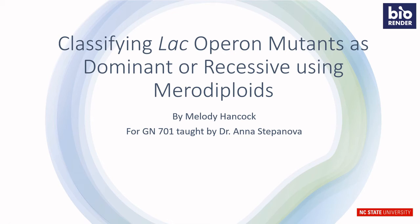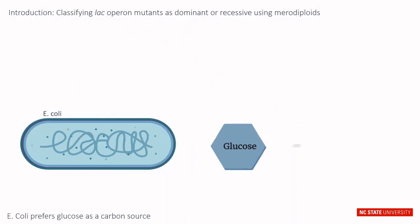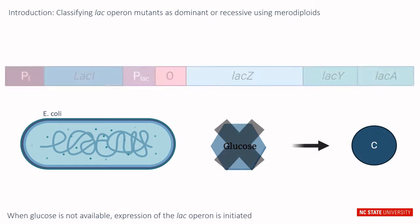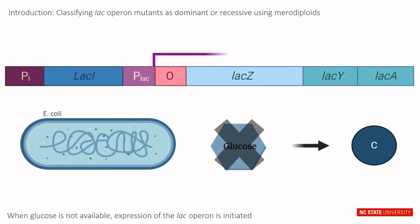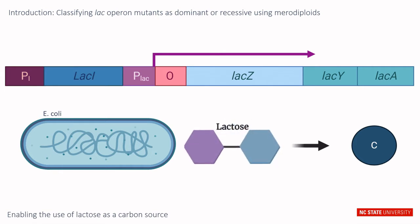In this video, we will be classifying lac operon mutants as dominant or recessive using merodiploids. E. coli prefers glucose as a carbon source, but when glucose is not available, expression of the lac operon is initiated. This allows for the use of lactose as a carbon source.